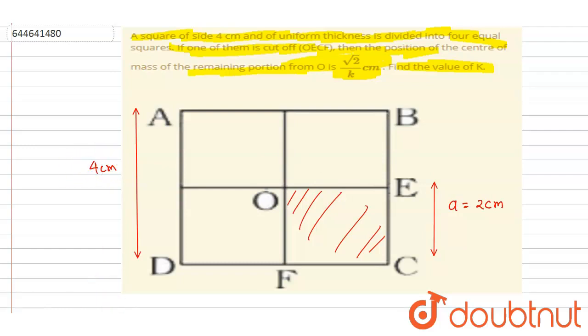If I draw x and y axis like this, then the origin will lie here. From the symmetry, if I talk about the center of mass of the remaining part, from the symmetry it will lie on this line.